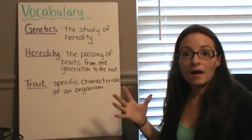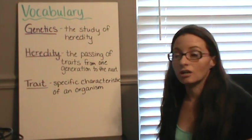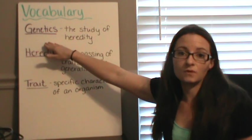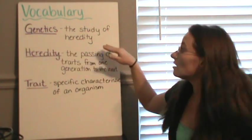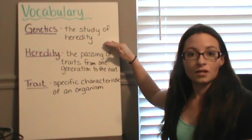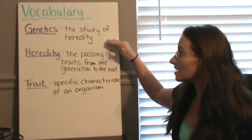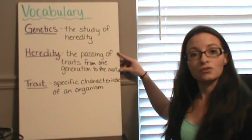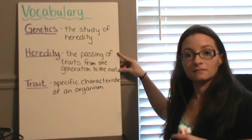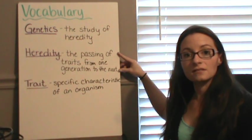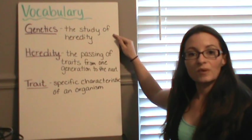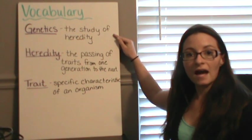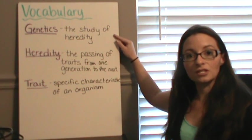So, basic vocabulary for this section that you need to know. You need to understand what genetics are. Genetics are the study of heredity. Now, heredity is the passing of traits from one generation to the next. So genetics is basically the study of how things are passed from one generation to the next.